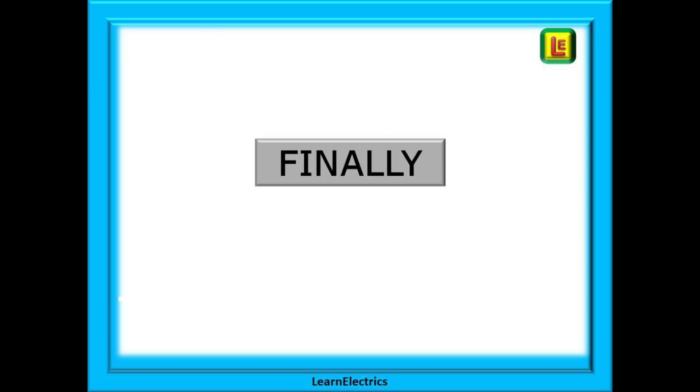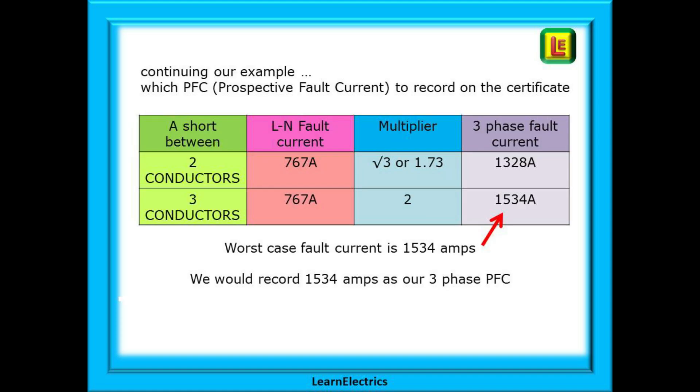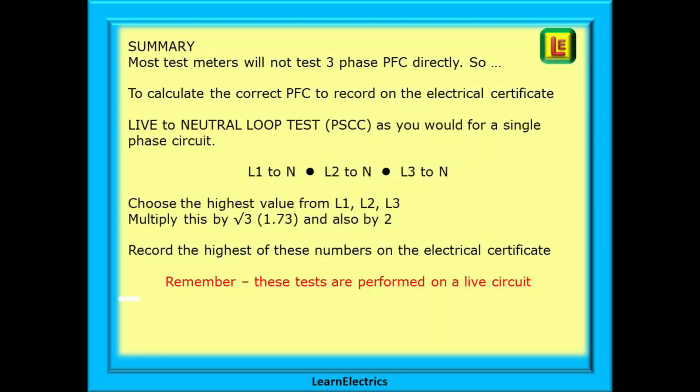Finally, which value are we to write on our electrical certificate? Look at this little table as we continue with our example. Which prospective fault current should we enter on the paperwork? It must always be the worst case values. If our installation can handle the worst case, then anything less than that should be OK too. Follow the table through to the rightmost column and you can see that we have two values of fault current: 1328 amps and 1534 amps. Here, we should enter 1534 amps as the three-phase prospective fault current.